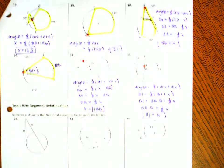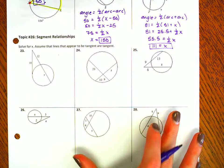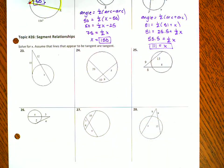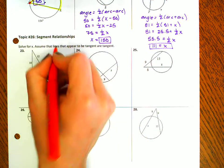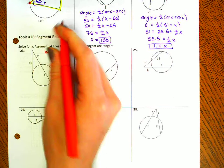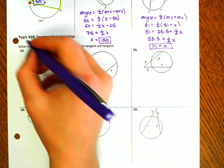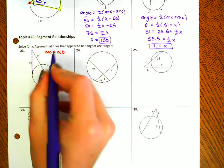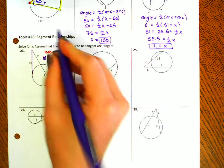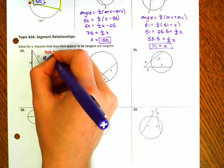On to a new section — this is Topic 26, segment relationships. These are all our PP and WOE-WOE problems. The first thing we need to do for each problem is figure out if it's a PP or a WOE-WOE problem. Since something goes outside the circle, this is a WOE-WOE problem. WOE stands for whole times outer. This whole segment here is 18, and the outer portion is also 18.